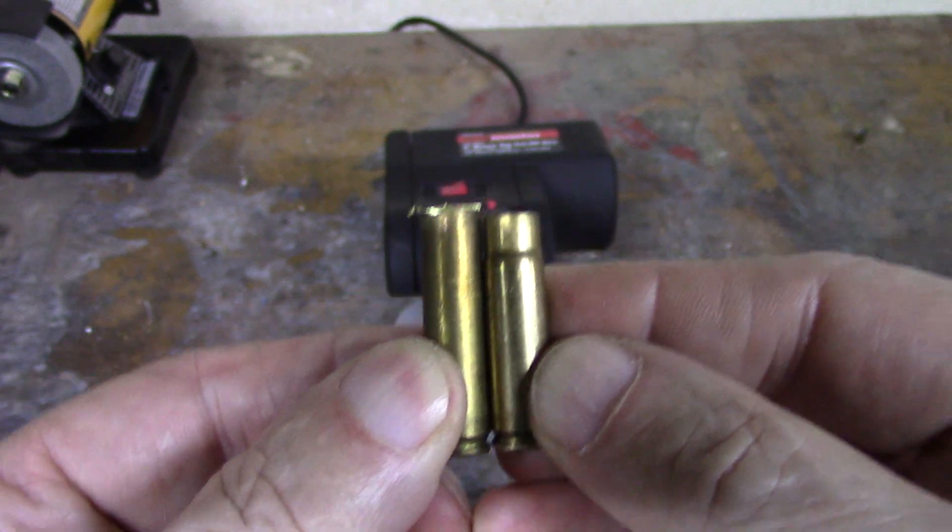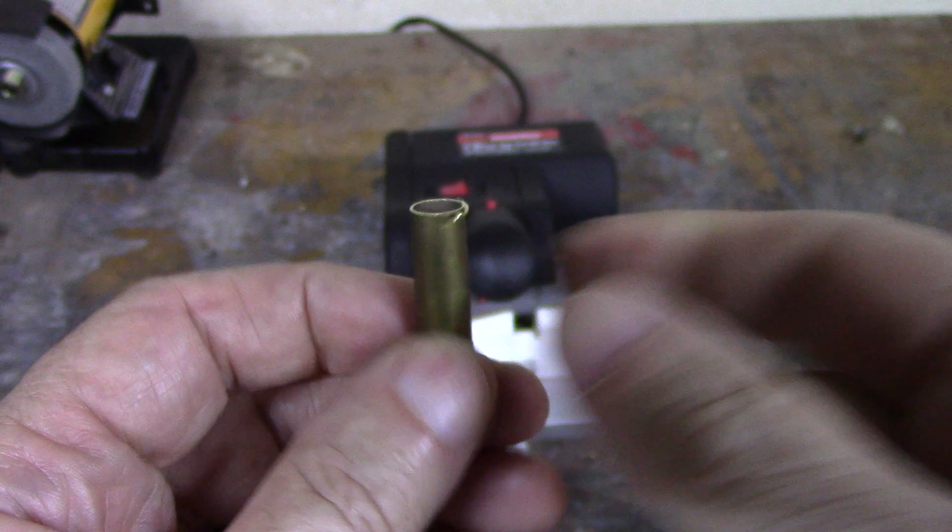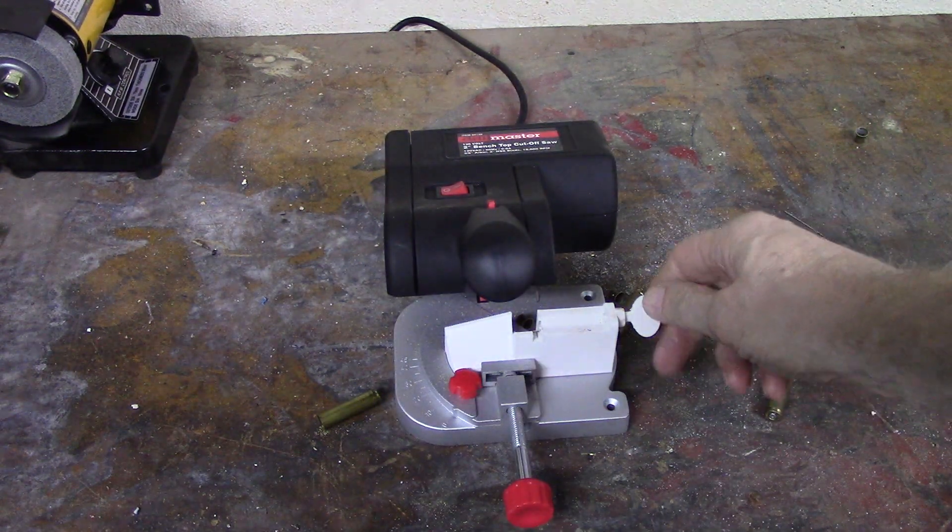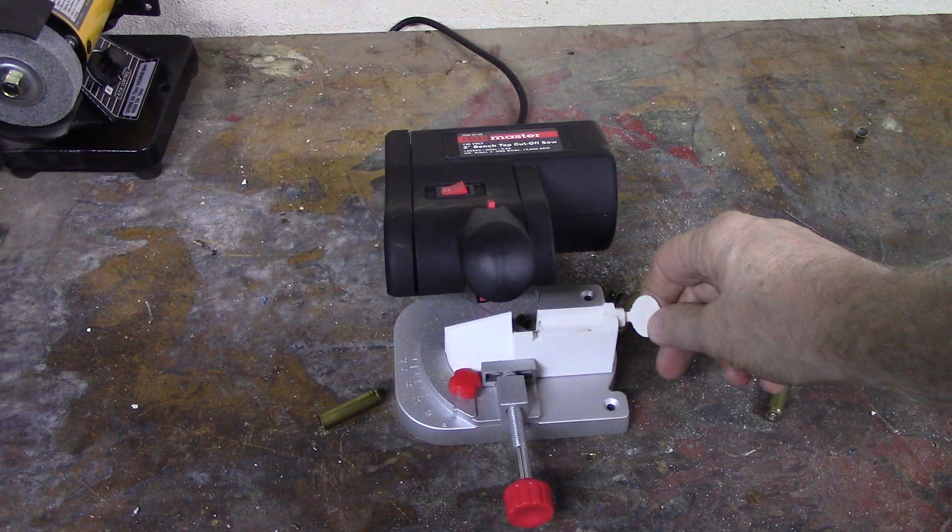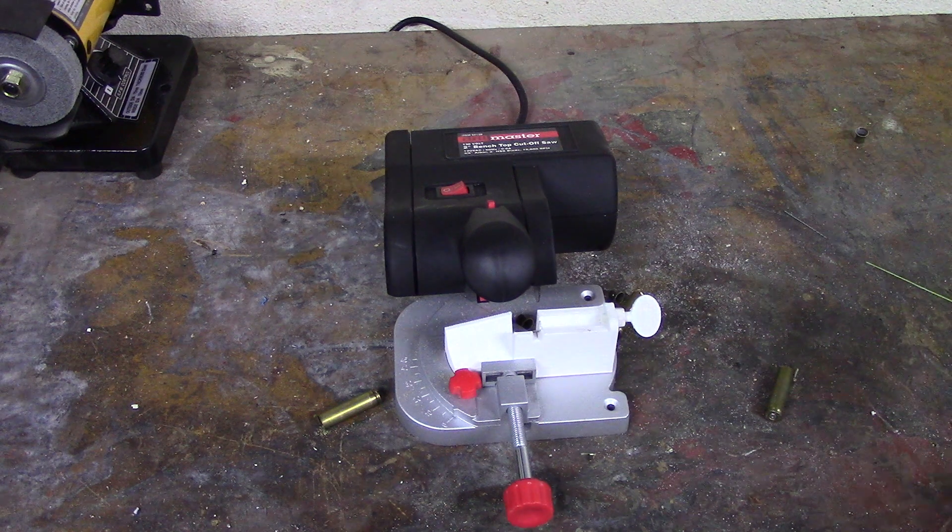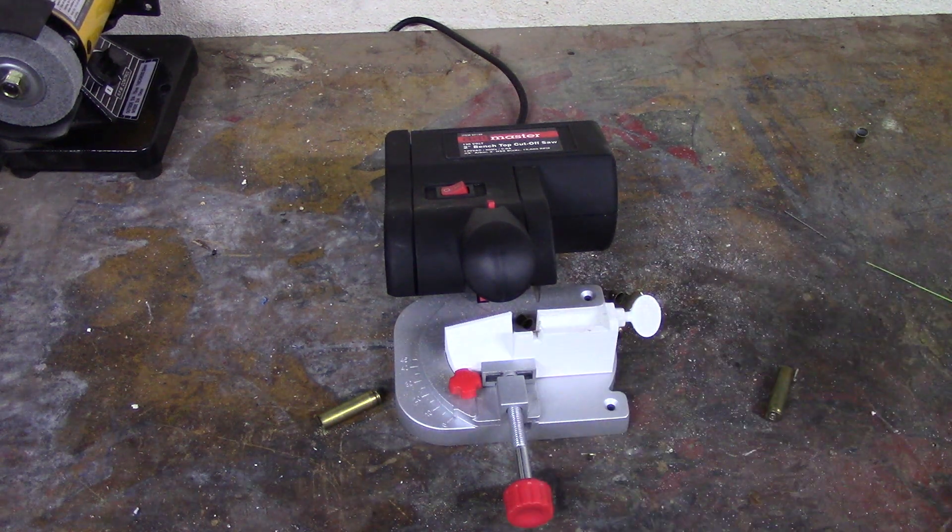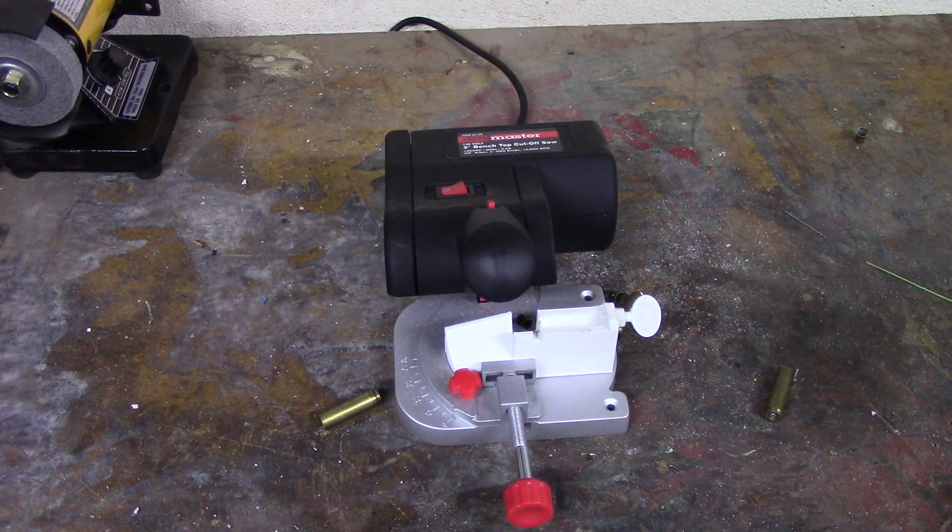The rest of that is going to get trimmed back on the case trimmer and then be deburred. And if you want to adjust that, you have about, I don't know, maybe three millimeters of adjustment longer. Why you'd want it longer, I don't know. And you have some adjustment this way, probably at least three millimeters, four millimeters that way if you want to try and trim it closer to length.